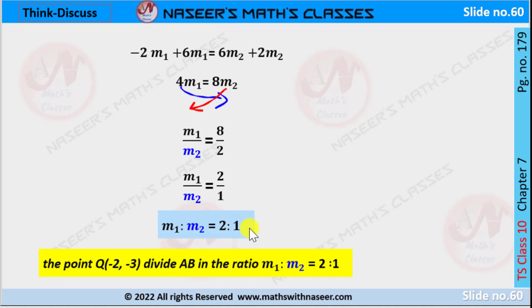Then the ratio of m₁:m₂ is given as 2:1. Therefore the point Q(-2,-3) divides AB in the ratio m₁:m₂ as 2:1.